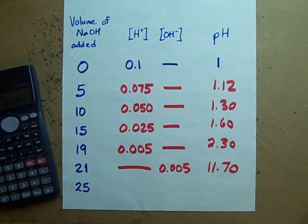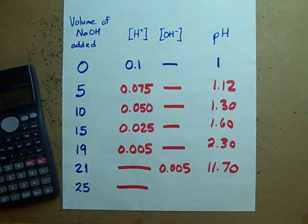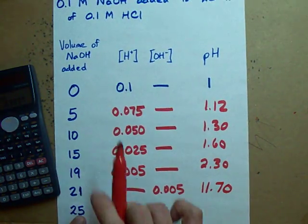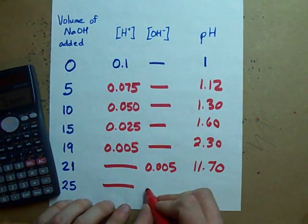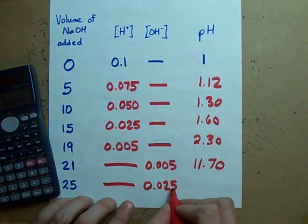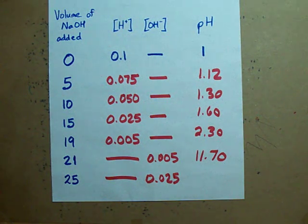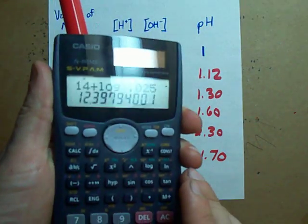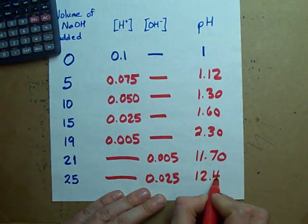If I add even more base, I certainly won't have any acid left and I'll have 5 milliliters of base left over relative to what I started with. Long story short, my concentration of OH- will be this and my pH will be 14 plus the log of 0.025. My pH will be 12.4. That's so big.